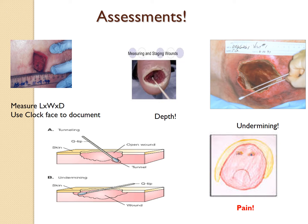Let's talk about the assessments you'll make when you actually have the wound in front of you. You need to measure all wounds — length times width times depth. I always tell students to use a clock face: the top of the wound closest to the patient's head is 12 o'clock, the lower part closest to the patient's feet is 6 o'clock, and by default you have 9 and 3. For depth, you want to use a cotton-tipped applicator — put it very gently into the deepest portion of the wound and measure how much is below the surface.